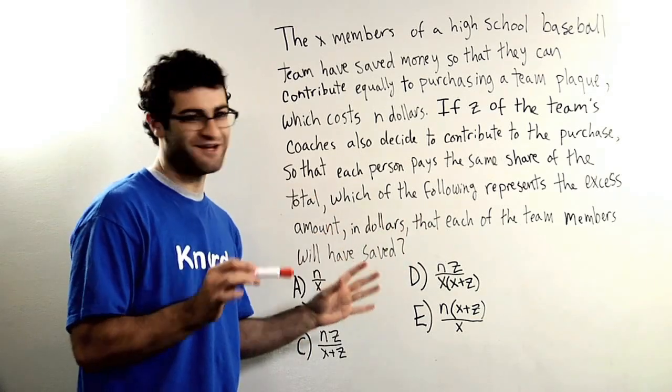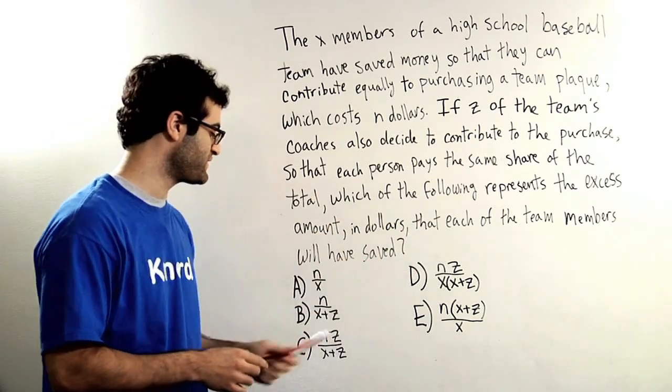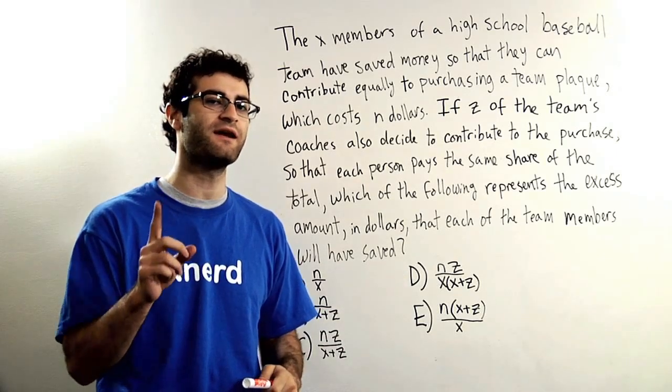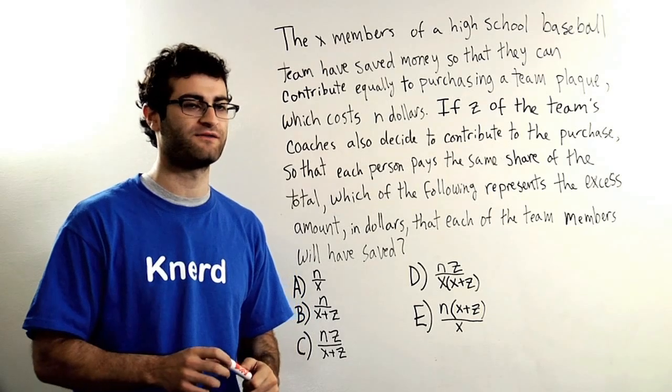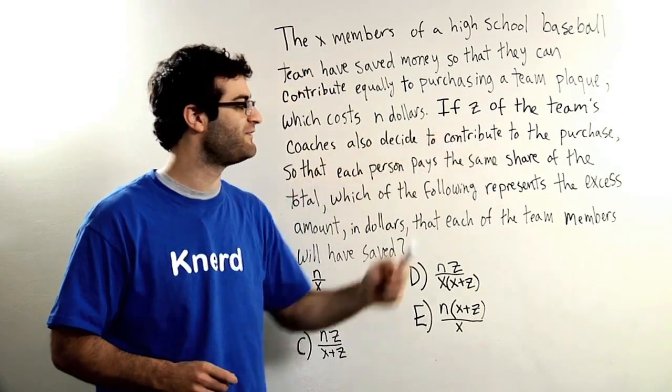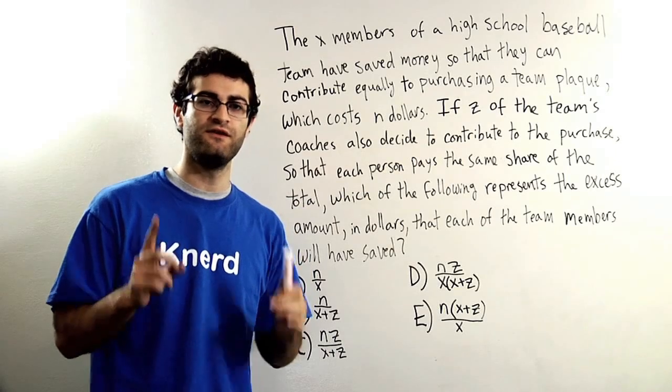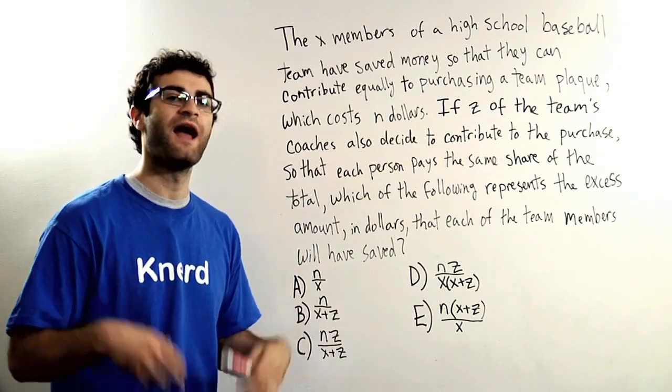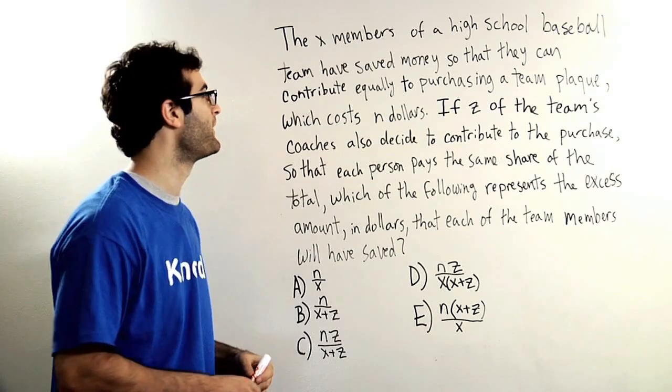A lot of stuff to notice about this question, first of which is that there are variables in my answer choices, which suggests to me that this is a plug-in numbers goal number question. So I'm going to choose values for my variables X, N, and Z, and I'm going to solve the question using those values, then I'm going to plug those values back into the answer choices and see which one gives me my goal number.